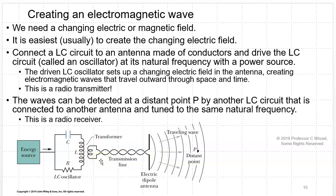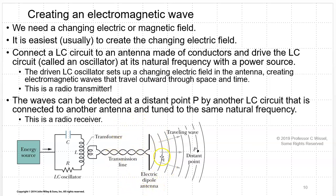The transformer here is an impedance matching device that matches the impedance of the circuit to the load — the transmission line and the antenna. The changing electromagnetic field makes the electrons in the antenna dance — literally switch back and forth, accelerating. Every time they change direction they're accelerating, and that acceleration creates a changing magnetic field, which induces a changing electric field, which induces a changing magnetic field, creating the traveling electromagnetic wave.